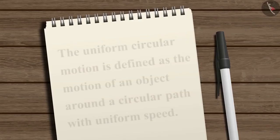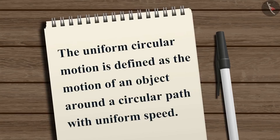Thus, uniform circular motion is defined as the motion of an object around a circular path with uniform speed.